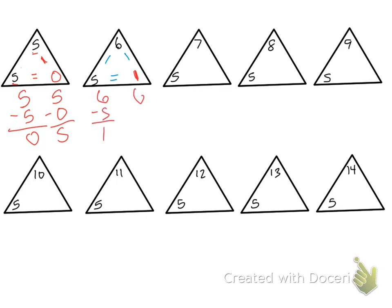Next one, I know that 5 plus 2 equals 7, so my facts are going to be 7 minus 5 equals 2, or 7 minus 2 equals 5. 5 plus 3 is 8, so we have 8 minus 5 equals 3, and 8 minus 3 equals 5.